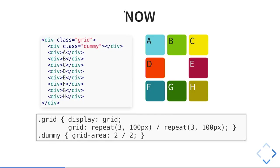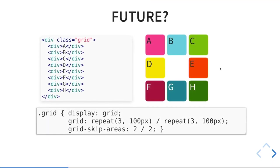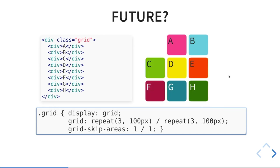Basically now, if you want to do something like this, you need a kind of dummy element that you place in the middle with no content, and then the rest flows around. In the future, with this property, we could use skip-areas: 2 / 2. So we are somehow in a time machine — we are now at the end of the presentation when we have already implemented this. It's working.